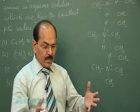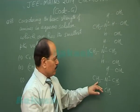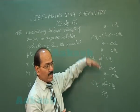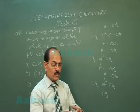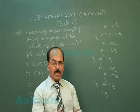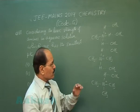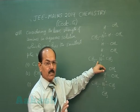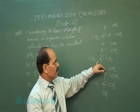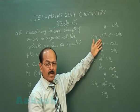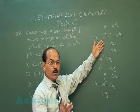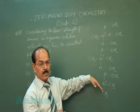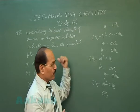Now, we have to take into account both factors. The +I effect of methyl is not very large, so when we compare the basic strength of methyl amines in aqueous solution, it is the solvation effect that dominates, not the inductive effect. So the most basic is dimethylamine, because both the inductive effect and solvation are moderate. This is followed by methylamine, because solvation dominates over inductive effect. Methylamine is more basic than trimethylamine, and aniline is the weakest base of the four options.